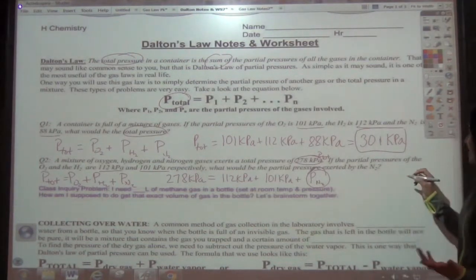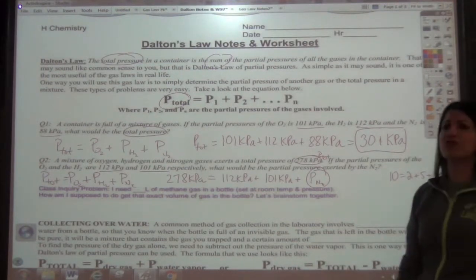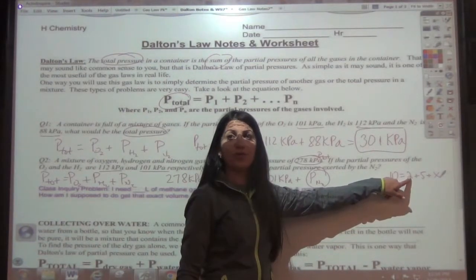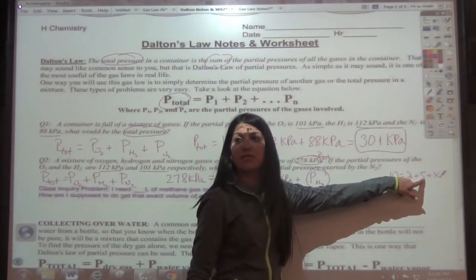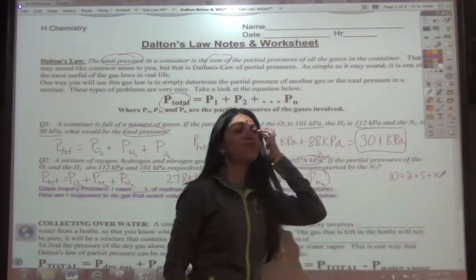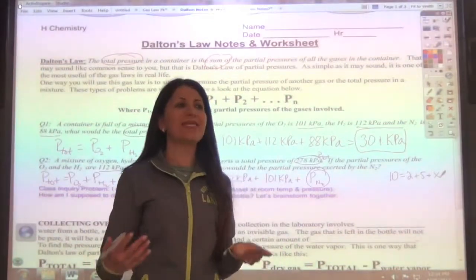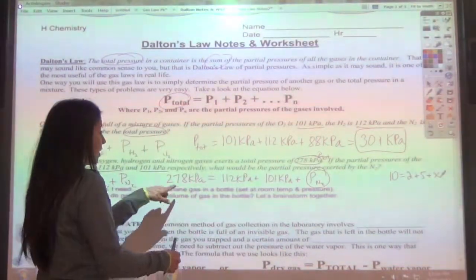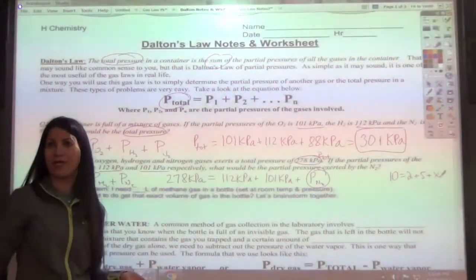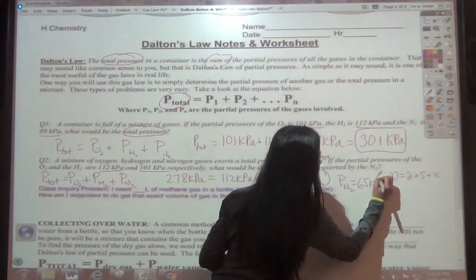That's what I'm looking for. And similar to if I said 10 is equal to 2 plus 5 plus X, how would you solve for X? Subtract. You would say 10 minus 2 minus 5 equals 3. Perfect. Okay. And so all you would do is just subtract the two. So some people will say, can I just add these and then subtract? That's fine. You just want to avoid any error in your calculator. And the easier thing to do to avoid the error is to say 278 minus 112 minus 101. And what do we get? 65. Perfect. The pressure of our N2 is equal to 65 kPa.